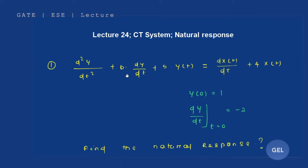The question says: d²y/dt² + 6·dy/dt + 5y = dx/dt, where x(t) is your input and y(t) is your output. The initial conditions given are y(0) = 1 and dy/dt at t=0 equals minus 2. We need to find the natural response, that is the zero input response.